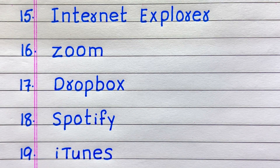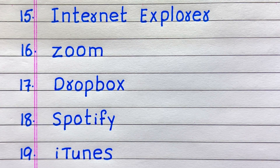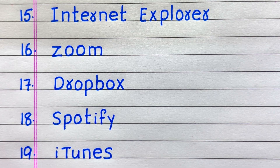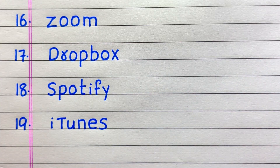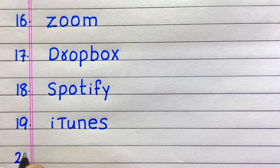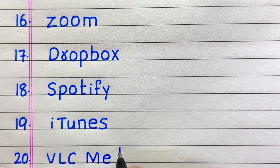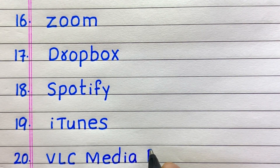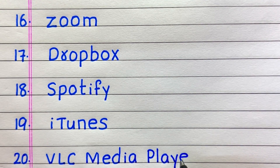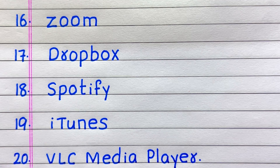15th example of a software is Internet Explorer. 16th, Zoom. 17th, Dropbox. 18th, Spotify. 19th, iTunes. Last one — 20th name of a software is VLC Media Player.